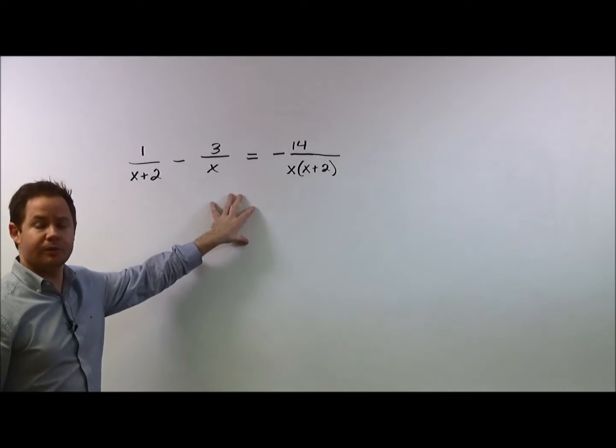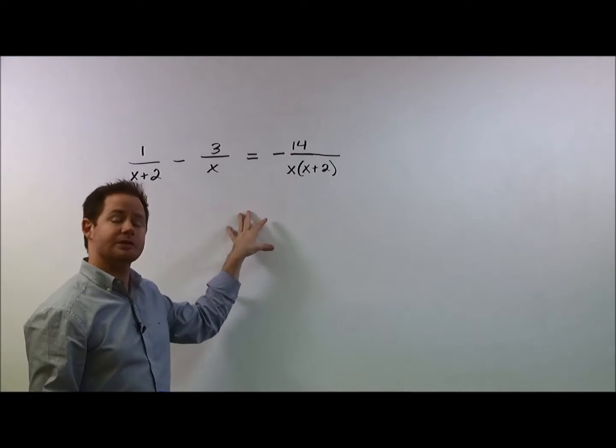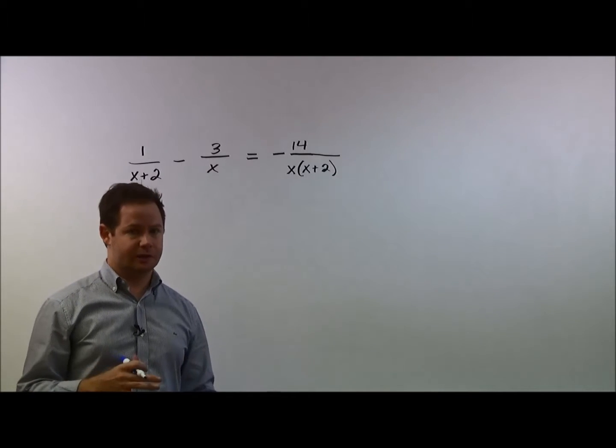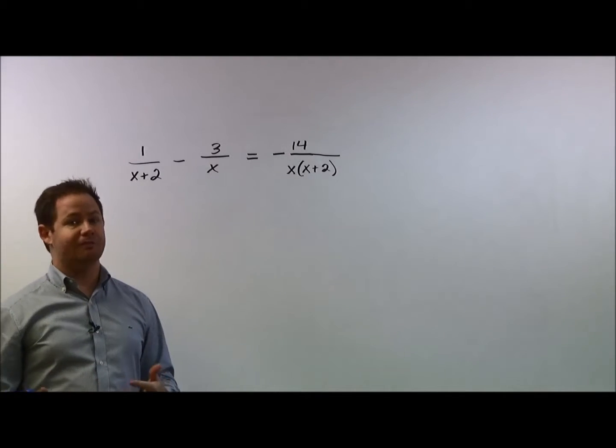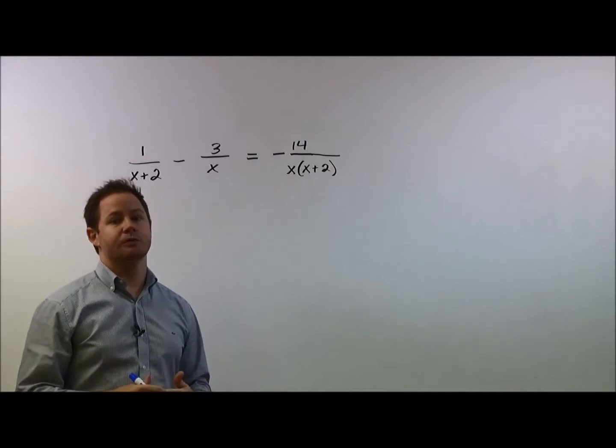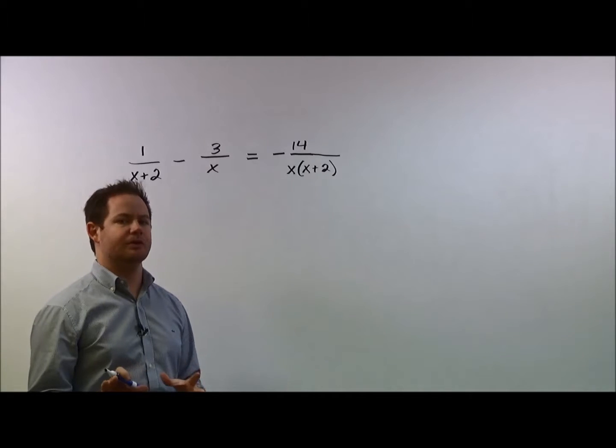So what's really important to make sure that we're comfortable doing is finding a common denominator. Now this video is designed for students who already understand how to find common denominator numerically. So if you have 1 half plus 1 third and you're looking for the common denominator there, you would find the least common multiple between 2 and 3 which would be 6 and that would be your common denominator.